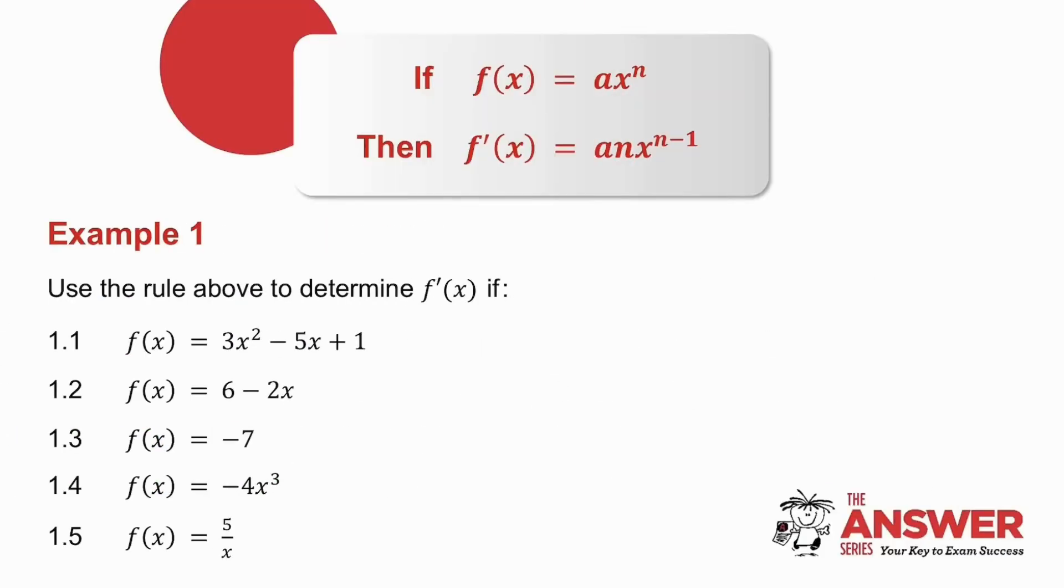So what we have is we now have our rule for finding a derivative. If I give you f of x is equal to ax to the n, you take the exponent times the coefficient, so a times n, and you subtract 1 from the exponent.